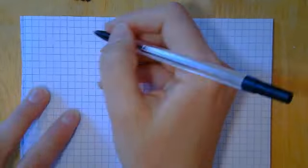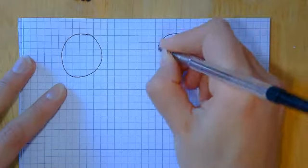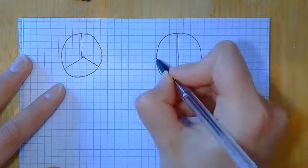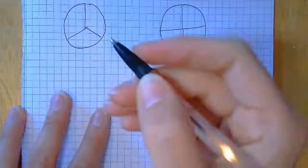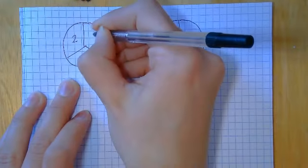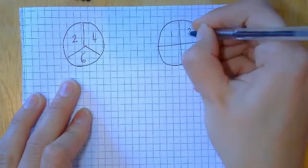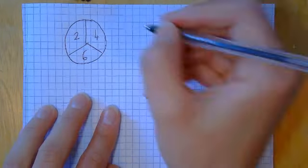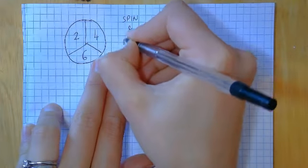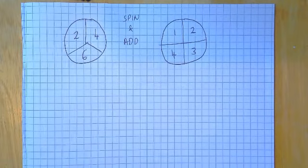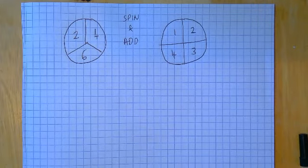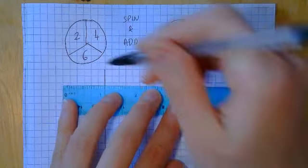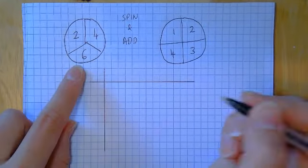Let's do one more. Draw two spinners again — I'm going to have a spinner split into three with two, four, and six on it, and another spinner split into four with one, two, three, four on it. The rule is we're going to spin and add them. You might want to pop a little add symbol there just to remind yourself. So if I get a two and a one, I add them to get three.